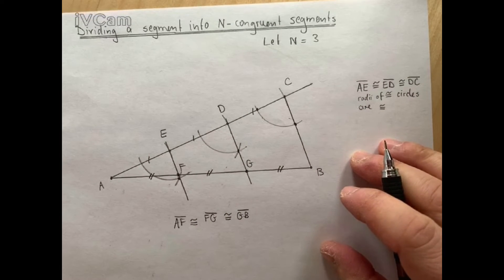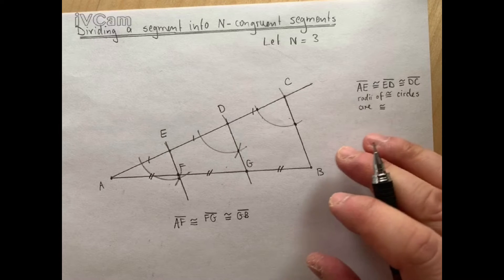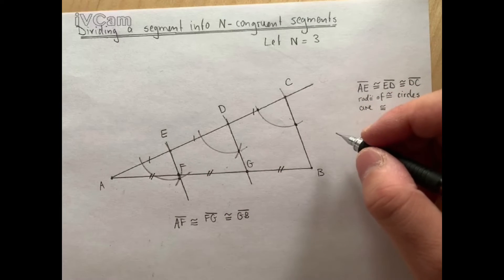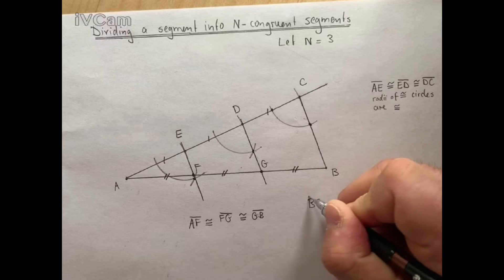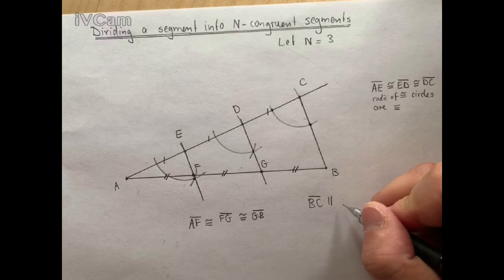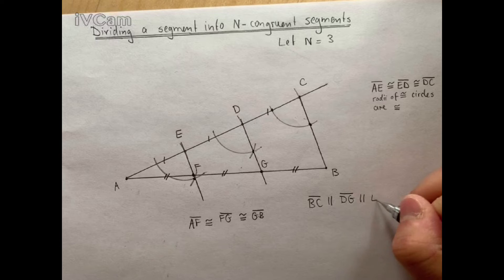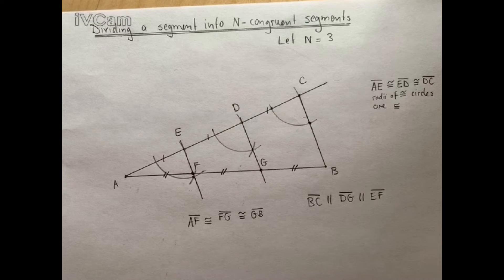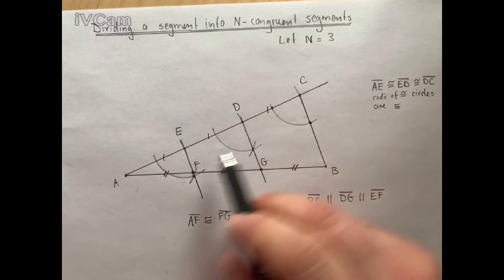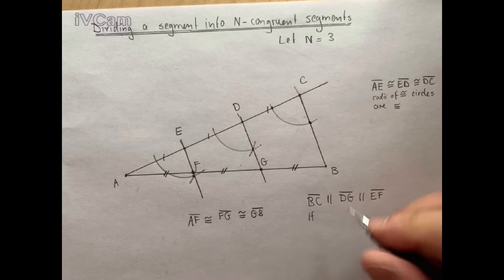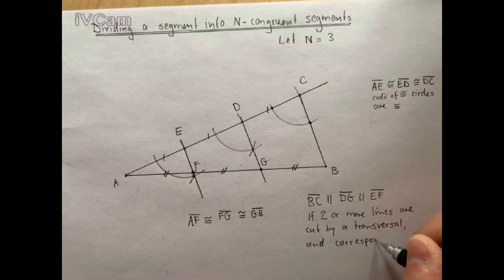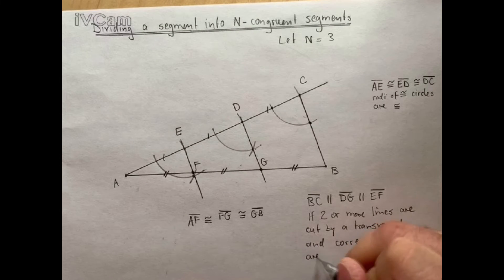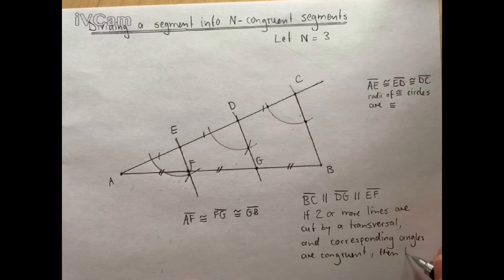Why does this construction work? Since we copied the angles, we know that line BC is parallel to line DG and parallel to line EF. The reason is we can look at AC as the transversal — if two or more lines are cut by a transversal and corresponding angles are congruent, then the lines are parallel.